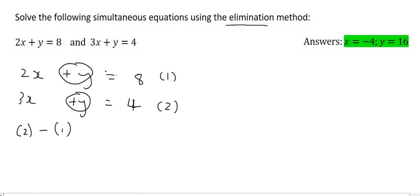So let's go ahead and minus equation two by equation one. We're going to start with equation two and say 3x minus 2x which is just x, then y minus y which cancels out, and then 4 minus 8 which is minus 4. So straight away we get x equals minus 4.